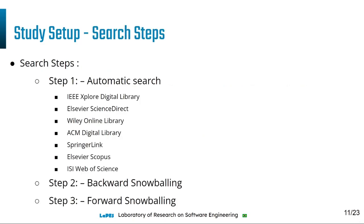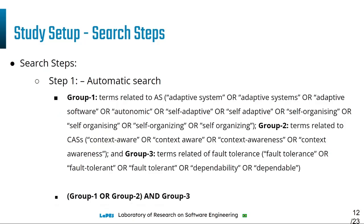Regarding the search steps we followed, we performed an automatic search in many databases. After that, we performed backward-snowballing and forward-snowballing techniques on our set of studies recovered from the automatic search. For carrying out the automatic search, we used terms related to adaptive systems and context-aware systems and also terms related to fault tolerance.